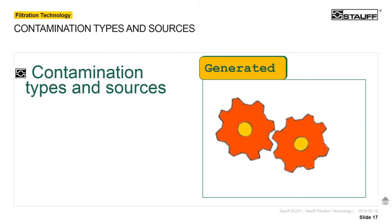Generated contaminants are the wear products of surfaces moving against each other in a hydraulic system — in pumps, motors, or valves. These contaminants can be very small, smaller than three microns. They can also be created under extreme pressure and high temperatures, making them very hard. These are the contaminants that generate other contaminants and accelerate the wear process. So we need a plan to limit ingression, remove inbuilt contamination, and filter out the really small particles generated during normal operation.